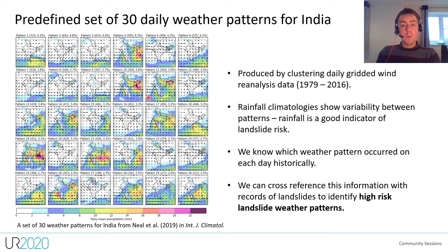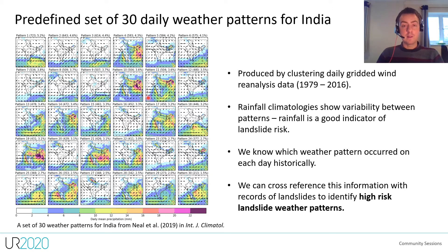In this work, high-risk landslide patterns are those which contribute the most rainfall in the 15 days leading up to each landslide event. We complete this analysis for each individual landslide event and then aggregate all the data to objectively identify a list of high-risk patterns. I am happy to discuss more about this process in the breakout room afterwards.